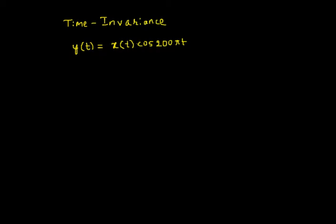To begin with, we already know that the definition of time invariance: a shift in the input must lead to an identical shift in the output. If that happens we say that the given system is time invariant, otherwise it is time variant.